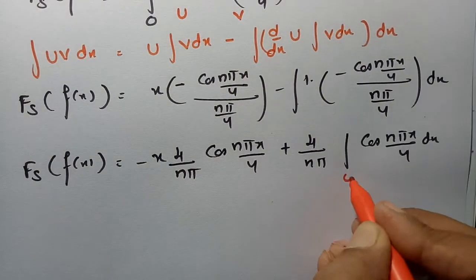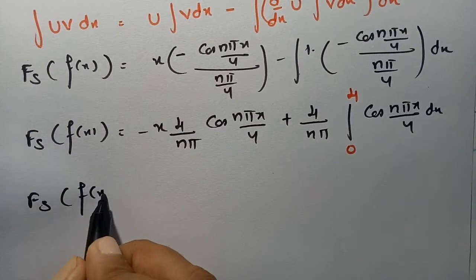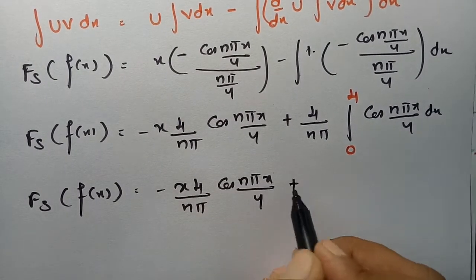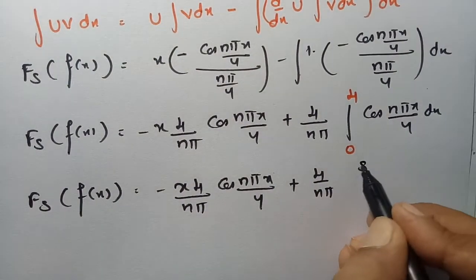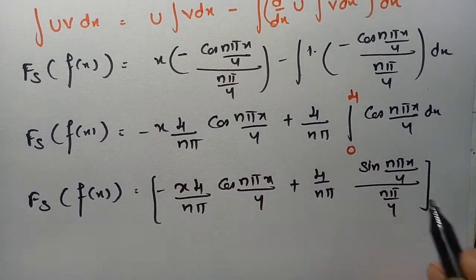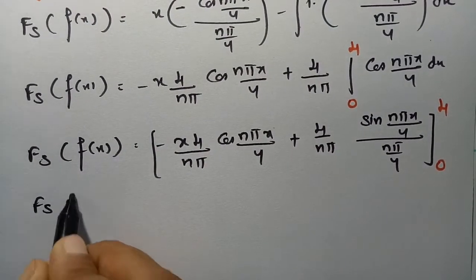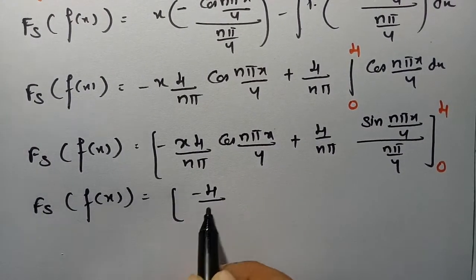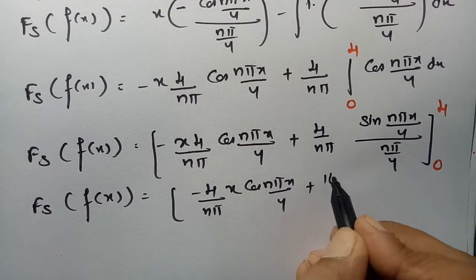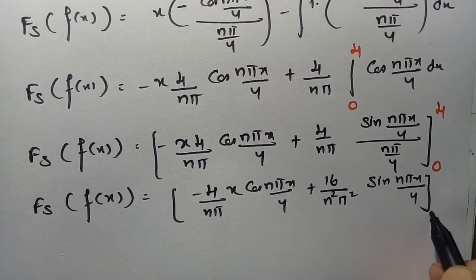So the finite Fourier sine transform of f(x) equals: −(4/(nπ)) x cos(nπx/4) plus (4/(nπ)) times [sin(nπx/4)/(nπ/4)], between limits 0 to 4. Sending 4 to the numerator gives +16/(n²π²) times sin(nπx/4), evaluated from 0 to 4.